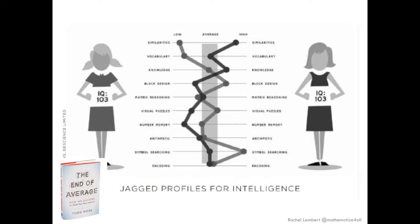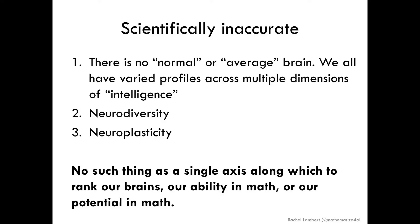This image from Todd Rose shows two kids with the same IQ score. Look how jagged their learning profile is. Look how multidimensional learning is. IQ particularly is not an actual descriptor of kids' understanding, of kids' learning. Understanding kids on very narrow, single metric scores is scientifically inaccurate.